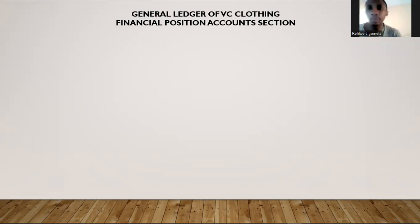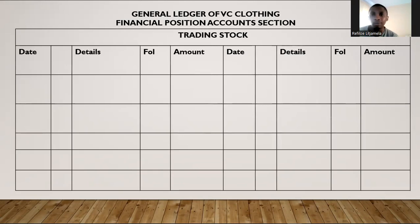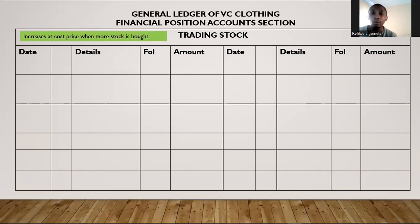Let us look at the trading stock account, which are ledger accounts. I'm going to start with the financial position accounts section. Trading stock is simply merchandise or goods that we buy in order to resell at a higher price to generate profits. Trading stock is an asset account, and since it's an asset account, it goes up at cost price and goes down at cost price — it increases on the debit side and decreases on the credit side.